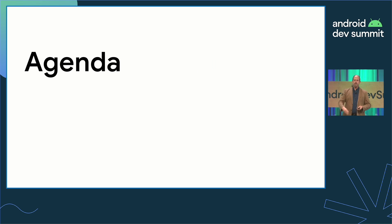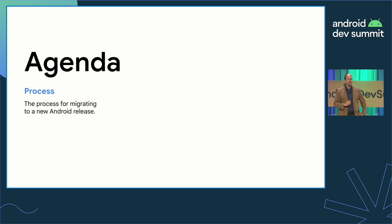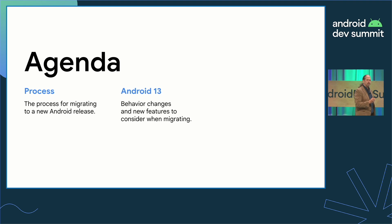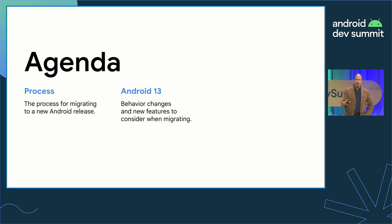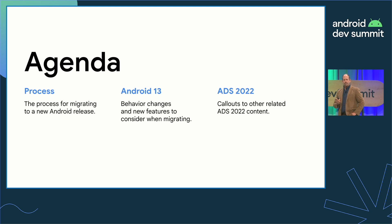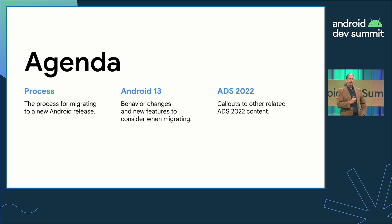I'm going to cover two things in this talk: the basic process for dealing with migrating to a new Android platform release, along with how this applies to Android 13 specifically — the changes it brings and how they might apply to your app — and how to dig deeper into this content with other ADS talks. Remember, there are three kinds of people: those who can count, and those who cannot.